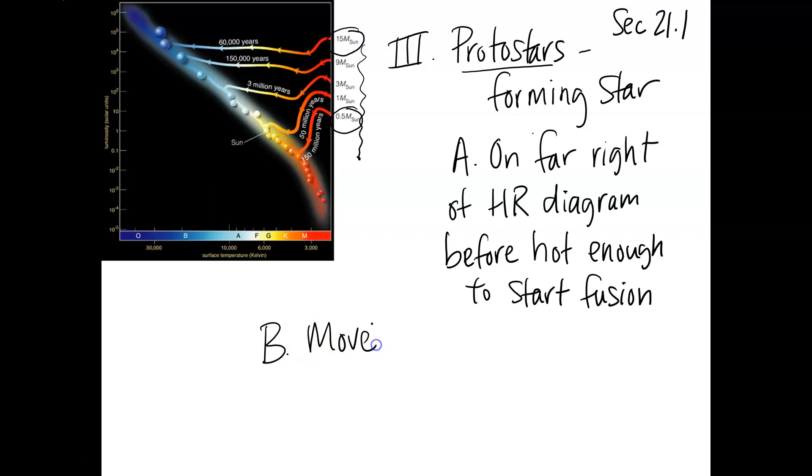It's going to move to the left on the diagram. What happens when something moves left? It's getting hotter, right? It's going to move left toward the main sequence where a star sits when it's a star. It's still not a star yet. It moves left toward the main sequence as it collapses and gets hotter.